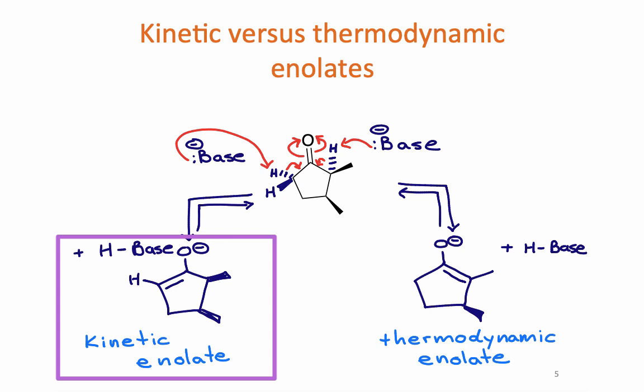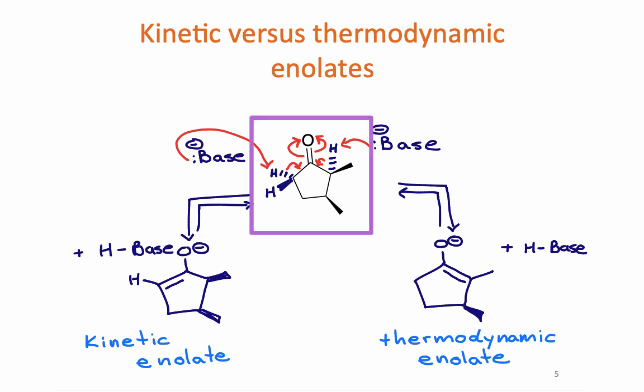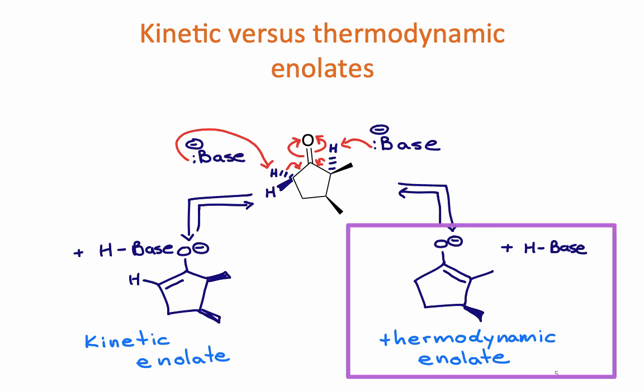So the kinetic product or the kinetic enolate forms first. In a situation where an equilibrium is set up or where the deprotonation is reversible, that kinetic enolate can go back to the starting material and then eventually, after that equilibrium goes back and forth, eventually the more stable product is formed.